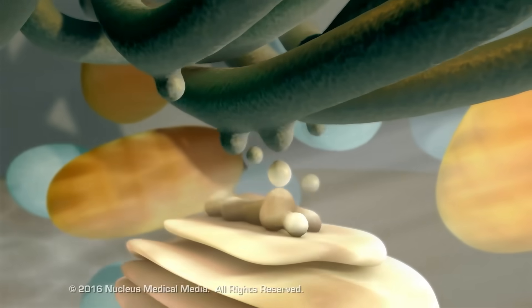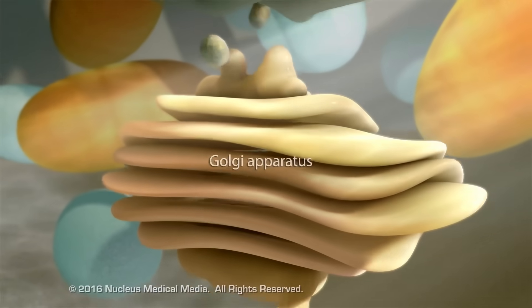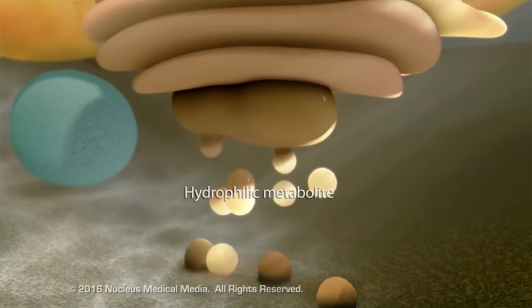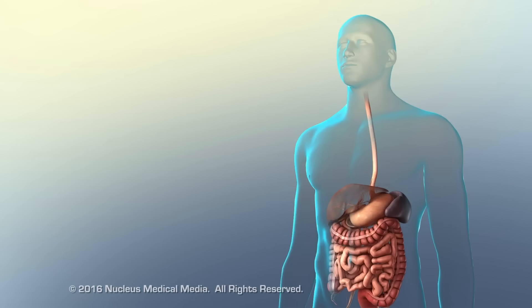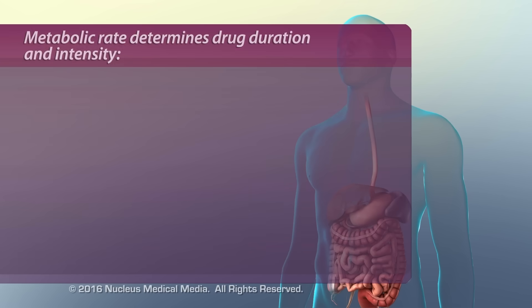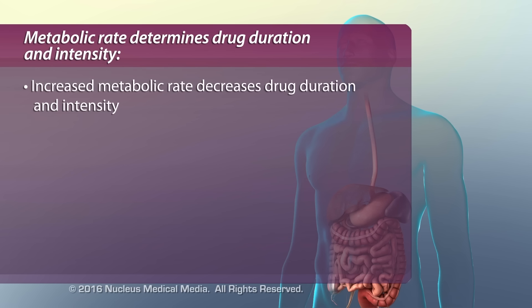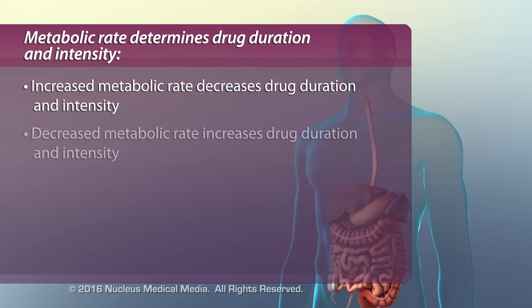Once metabolized, these hydrophilic metabolites leave the cell ready for excretion. A drug's duration and intensity of effect are largely determined by metabolic rate. Increased metabolic rate will decrease drug duration and intensity by facilitating excretion. Decreased metabolic rate increases drug duration and intensity.